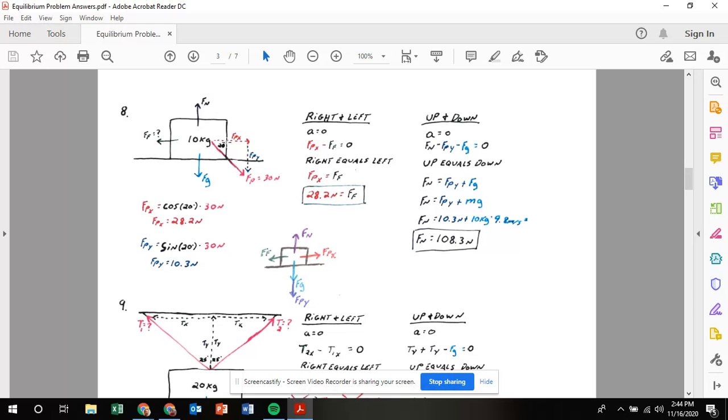Up is going to equal down. I have one upward force, which is my normal force. And I have two downward forces, so my upward normal equals my two downward forces, force of pull on the y and force of gravity. Force of pull on the y is 10.3 newtons. Force of gravity is mass times 9.8, so that's 10 times 9.8. Add those two together, and you get the normal force is 108.3 newtons.